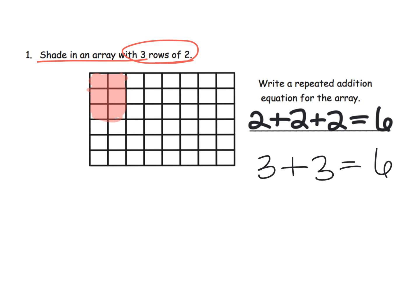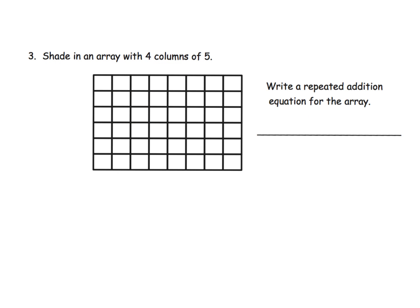Another example: shade in an array of four columns of five. Once again, we're really practicing that vocabulary. Parents and teachers, this is where you're really going to want to think about creating a word wall, some sort of GLAD strategy that is going to allow all your students to access all of this academic vocabulary.